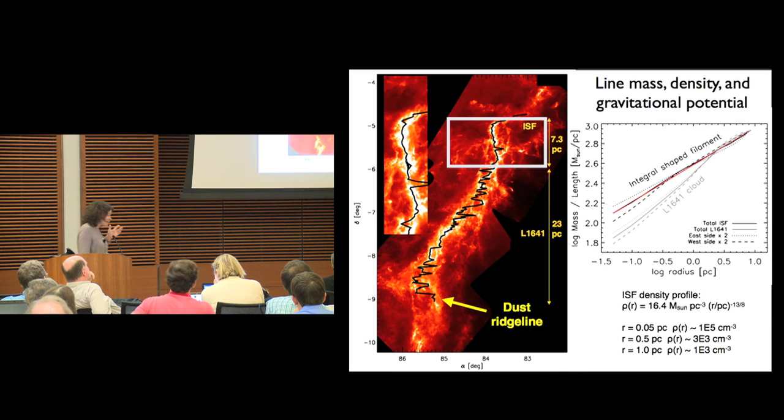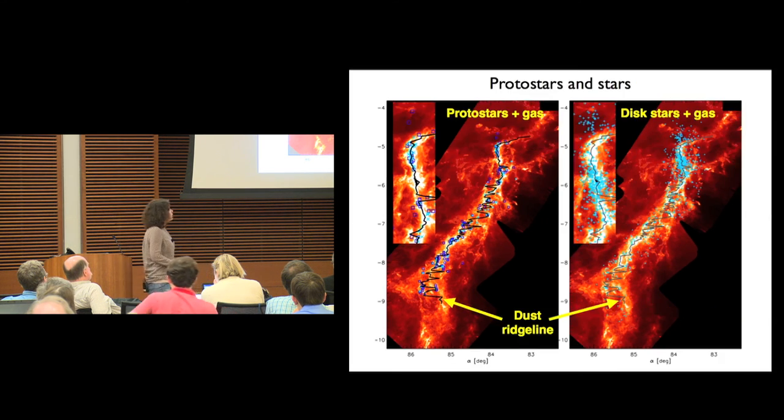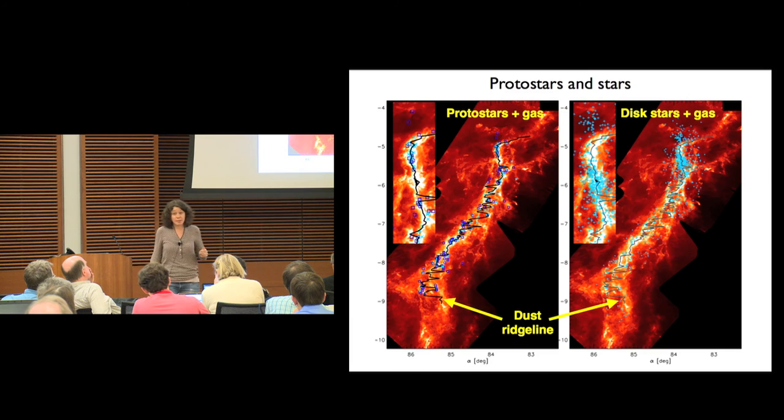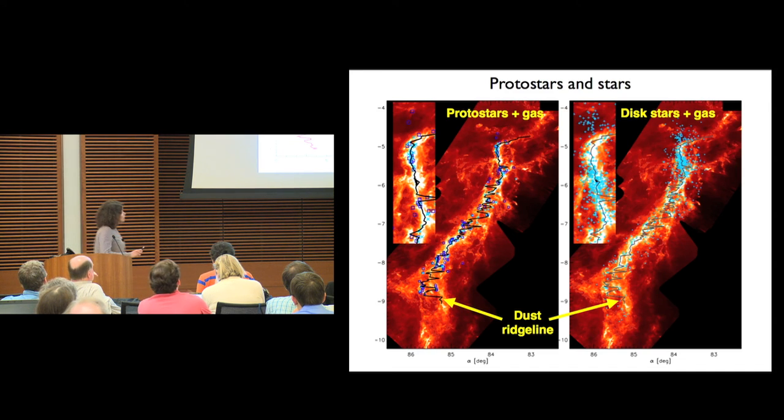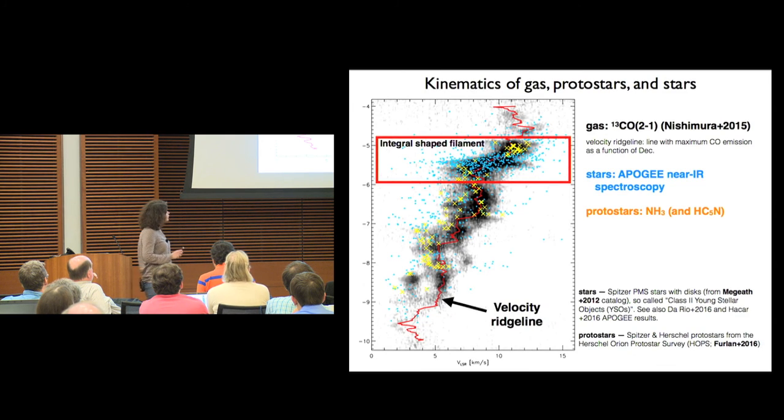So what's happening with the protostars and the stars in the cloud? We see that the protostars are almost exclusively located on the filament in the north and almost so in the south, whereas the stars are much more spread out in space. If this is a dynamical object like I've been describing, this should be true kinematically as well, and this is exactly what we see.